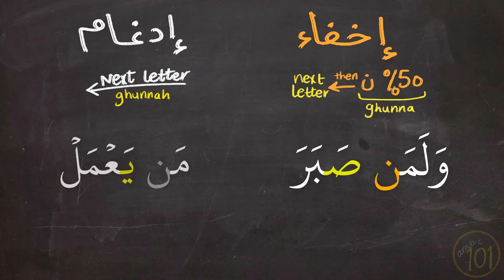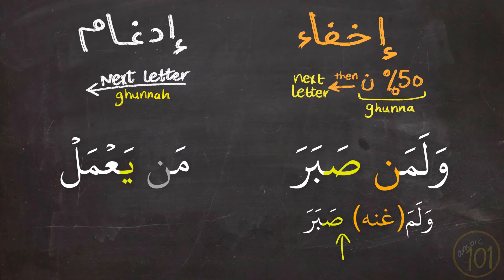وَالْمَنْ صَبَرْ — مَنْ يَعْمَلْ. In the first example of Ikhfa (وَالْمَنْ صَبَرْ), we first pronounce the Noon for two Harekat — not entirely, only half of it, the Ghunna — and then start with the letter that follows. So we say وَالْمَوْ, then start the next word: صَبَرْ. It would sound like: وَالْمَوْ صَبَرْ. The next letter only starts at the back of the Noon Sakinah; there is a Noon Sakinah, but only half of it is pronounced.